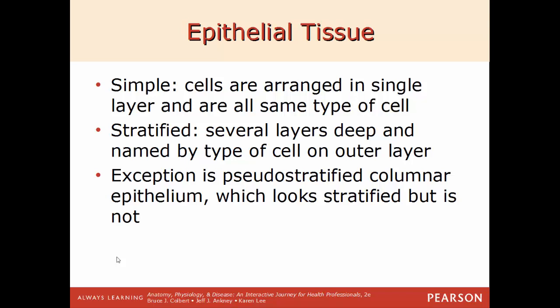There is an exception: a type of tissue called pseudostratified columnar. At first glance it may look stratified, but it isn't, because of the different cell shapes and sizes. That's why it's called pseudostratified — pseudo means false or fake — so it's falsely stratified columnar.